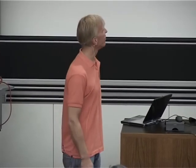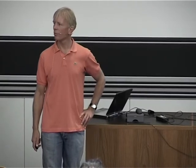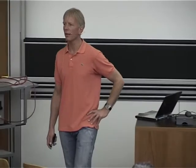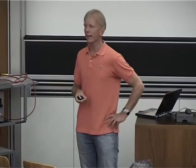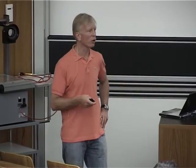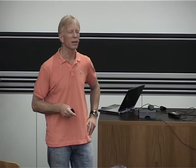I am introducing here failure events and basic random variables. By a failure event, we associate an event of special interest — typically an event associated with consequences that we need to assess in the context of decision making. We identify events associated with cost consequences, loss of life, injuries, or damage to the environment, and then we try to formulate these events in terms of parameters which will influence the problem. Some of those parameters may be uncertain, and we model them using random variables.